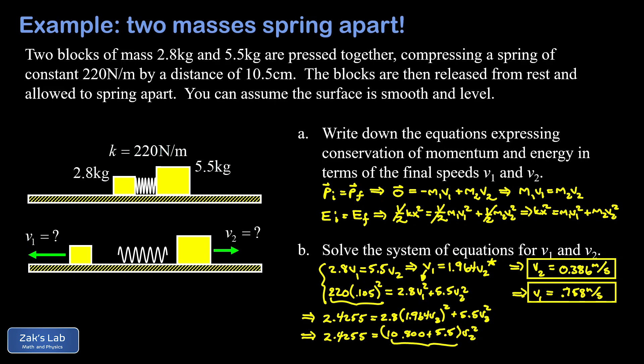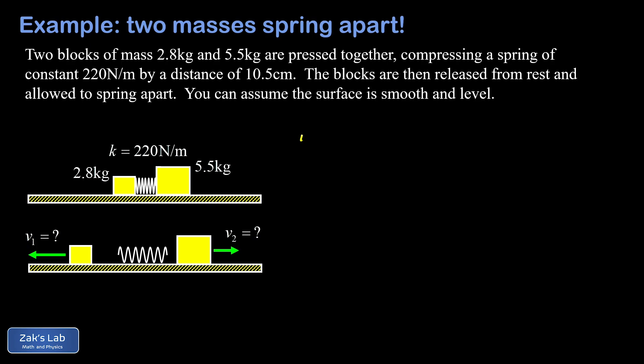For my engineering students, I would expect a complete symbolic solution before we plug the numbers in. We always get a little more insight into a problem if we solve it in general form first. Let's start from these equations: m1·v1 equals m2·v2 from conservation of momentum, and kx² equals m1·v1² plus m2·v2² from conservation of energy. Our solution strategy is to solve the first equation for one of the velocities and substitute into the second equation. We can solve for v1 as m2/m1 times v2.